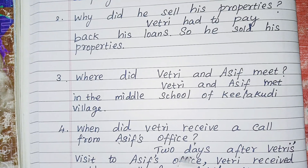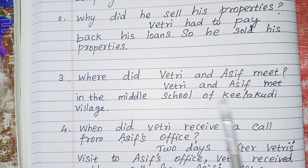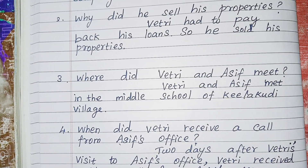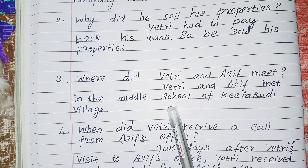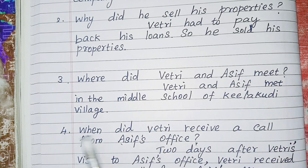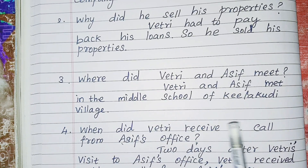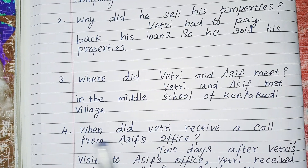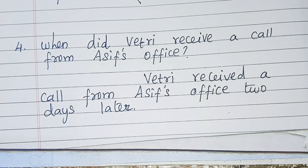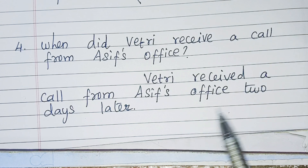Third one: Where did Vettri and Asif meet? Vettri and Asif met in the middle school of Keelapudi village. Fourth question: When did Vettri receive a call from Asif's office? Vettri received a call from Asif's office two days later.